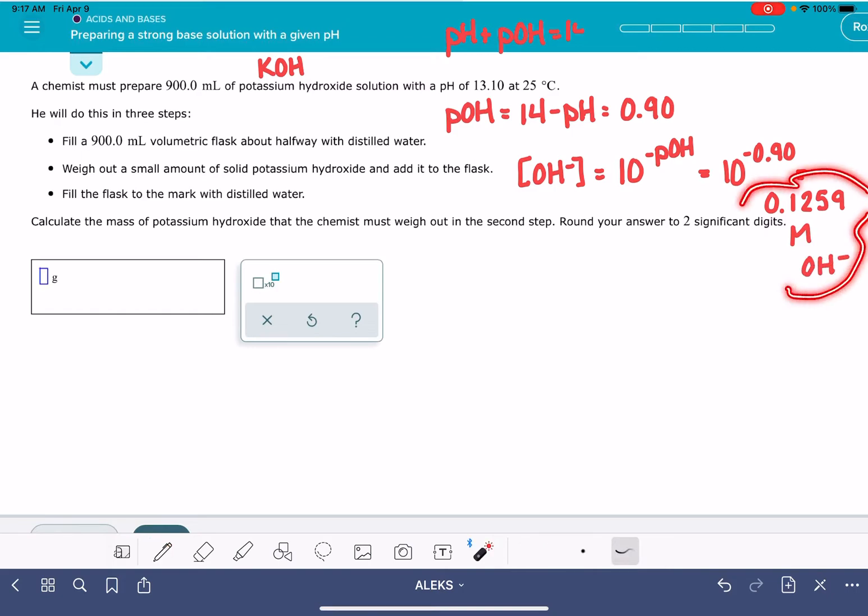Now, if you're feeling a little bit unsure, like did I do the math right, you can just take the negative log of that number. And if you take the negative log of that number, you're going to get 0.9. So you know that you've done it correctly.